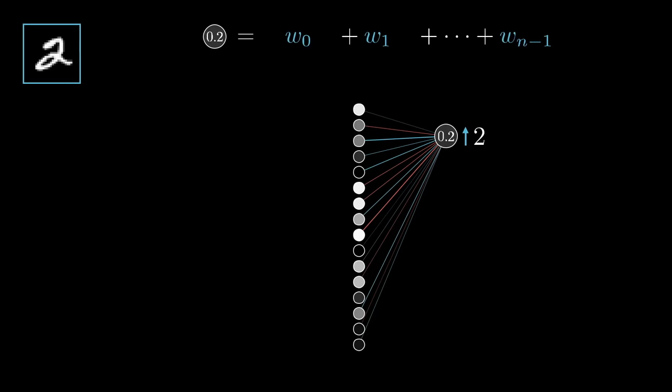Remember, that activation is defined as a certain weighted sum of all the activations in the previous layer, plus a bias, which is all then plugged into something like the sigmoid squishification function, or a ReLU. So there are three different avenues that can team up together to help increase that activation. You can increase the bias, you can increase the weights, and you can change the activations from the previous layer.